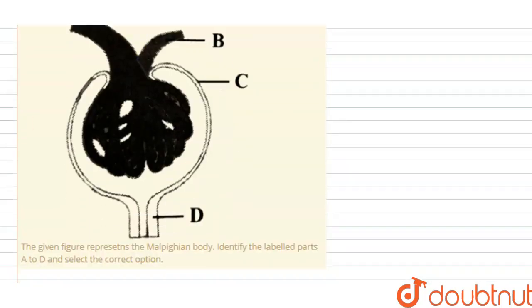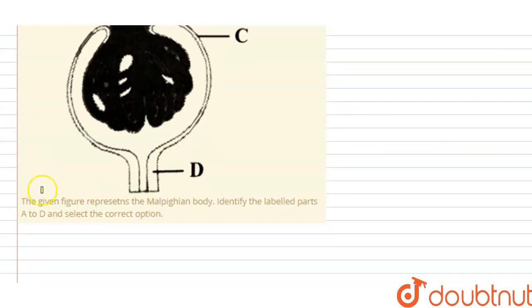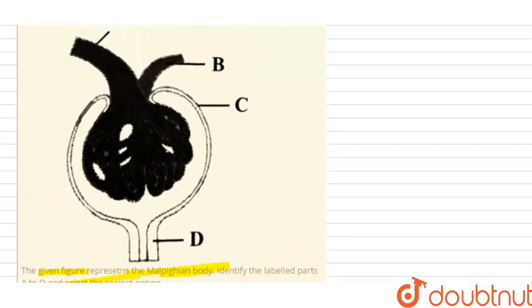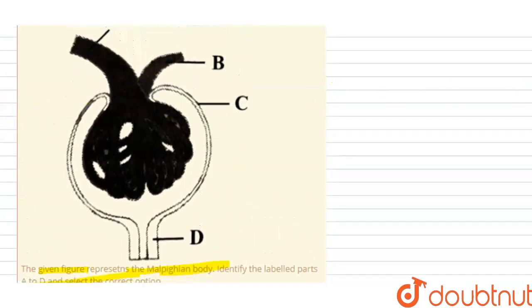...says that a diagram has been given and they are asking us to label the diagram. This diagram is of the Malpighian tubule. Can you see it clearly over here? This is the diagram for the Malpighian tubule.